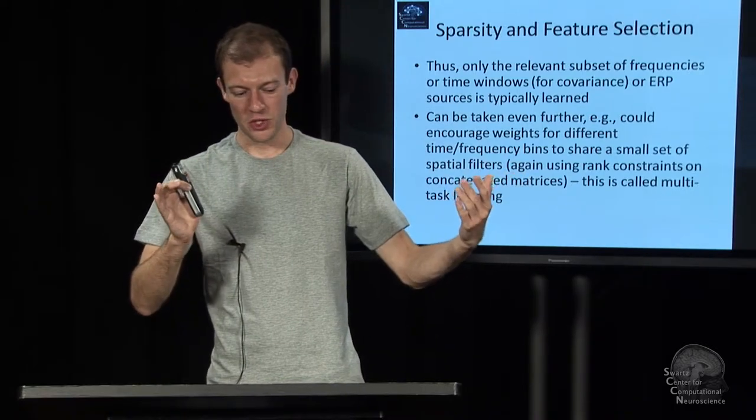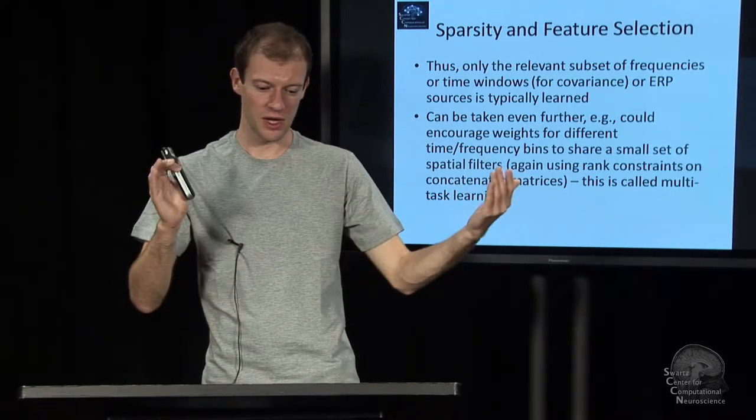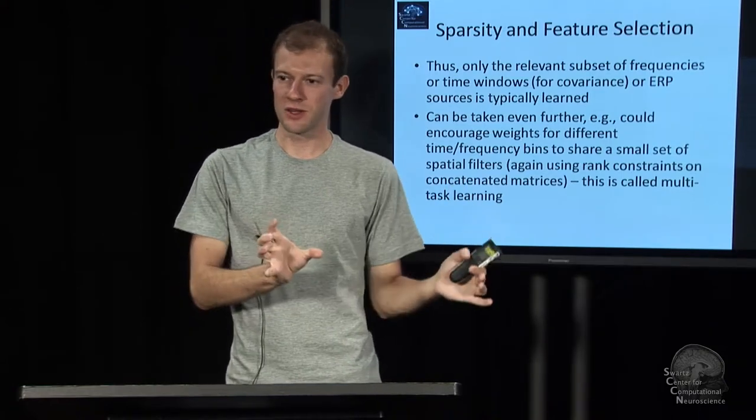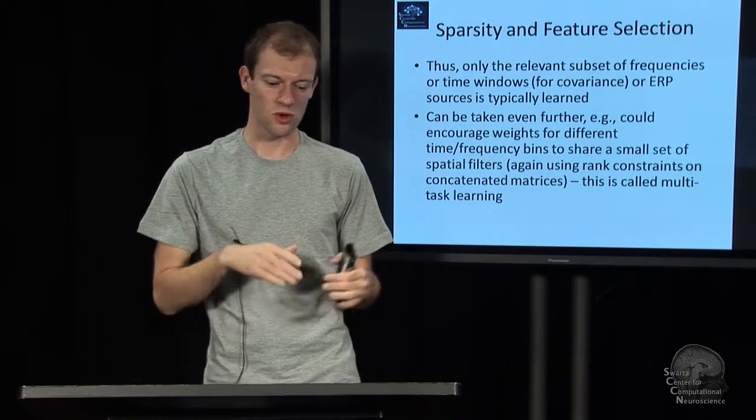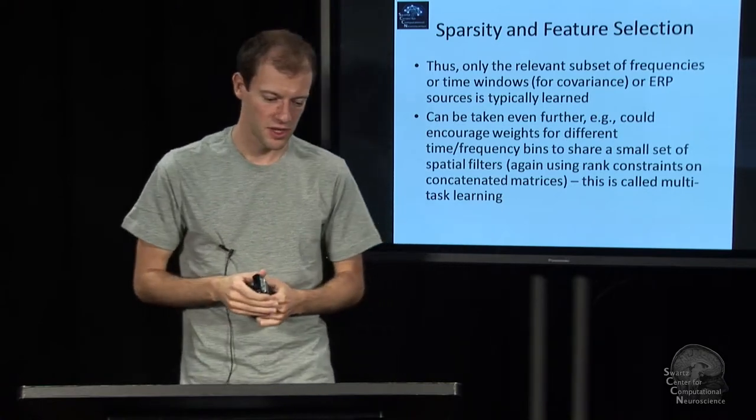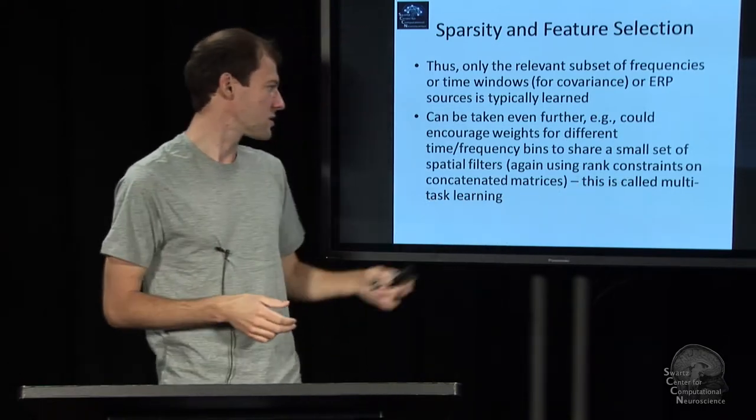And so you encourage some kind of sharing of statistical strength, as it's being called, across unrelated, seemingly unrelated tasks, or not necessarily completely related tasks. And that's an example of what's called multi-task learning.